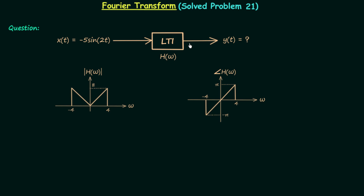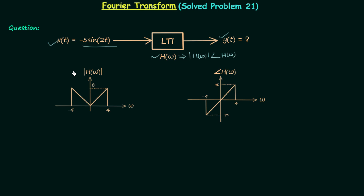In this question we have an LTI system with input x(t), output y(t), and frequency response H(ω). The input is given as minus 5 sine 2t. The frequency response is a complex function having magnitude represented by |H(ω)|, known as the magnitude response, and angle represented by ∠H(ω), known as the phase response. We have the magnitude response plot and the phase response plot given here.